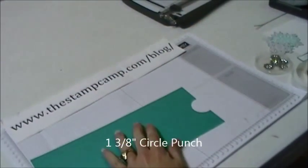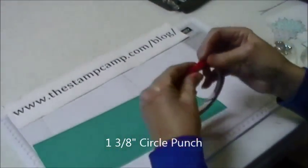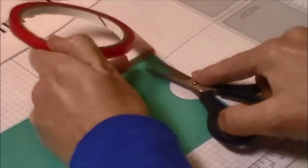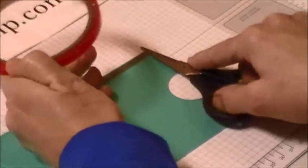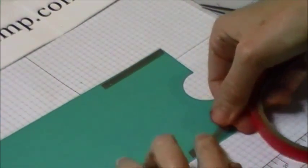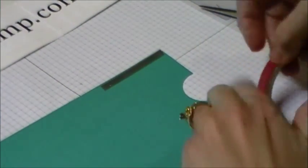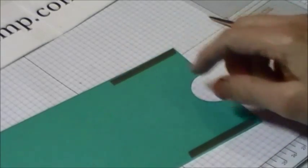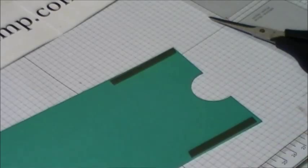You are going to take some red line tape and you're going to run it along each side on the piece that you punched the half circle out of, like so.